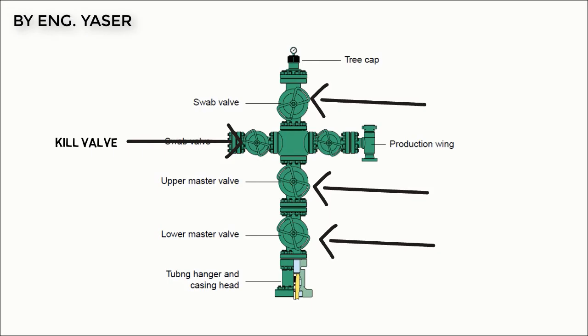The wing valves are used to connect the Christmas tree with the production line, which transfers the oil to the manifold. The swab valve is normally used to monitor the wellhead pressure by a pressure gauge. In other circumstances it is used to insert workover tools and logging tools. The kill valve is primarily used for injection of fluids such as corrosion inhibitors or methanol to prevent hydrate formation.